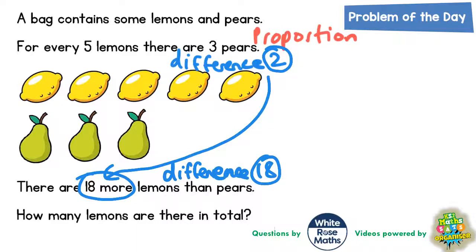The difference of two is turning into a difference of 18, so our difference is becoming nine times bigger. Two times nine makes 18. If our difference is becoming nine times bigger, then we need to make the number of lemons and pears nine times bigger.